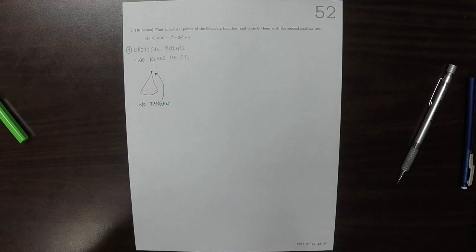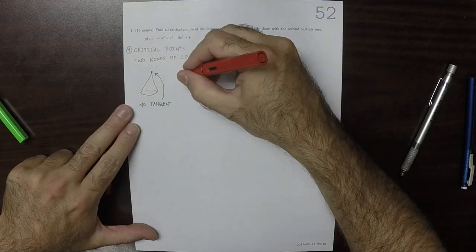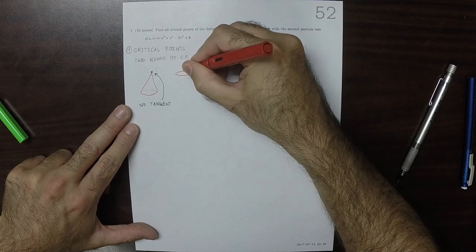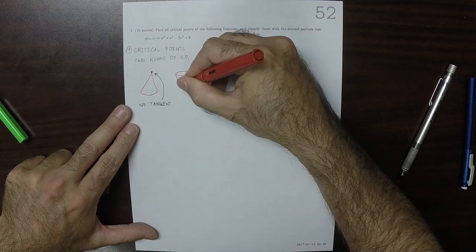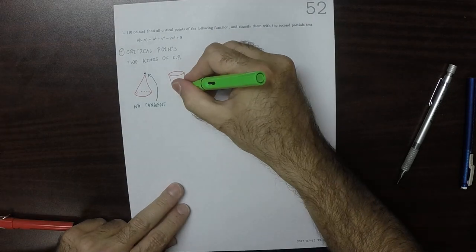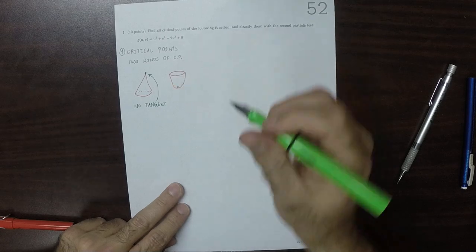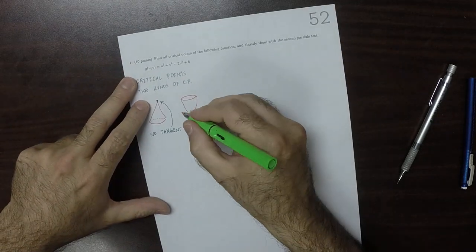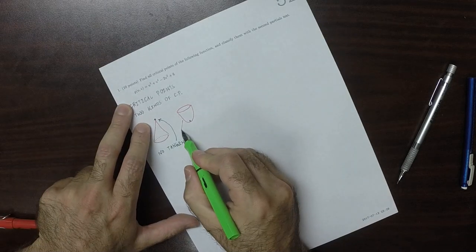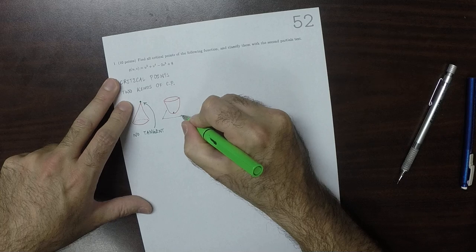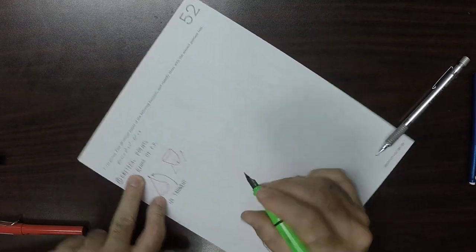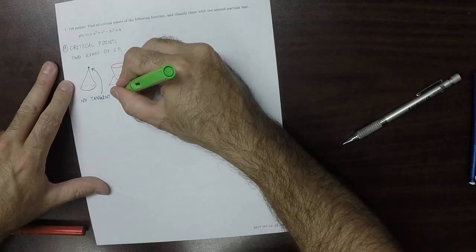The other kind of critical point can occur at a place like a minimum. So here, at the minimum point of that cup, there is a tangent, which means that the world begins to look flat if you're small enough. But more than that, and what makes it critical, is that this is a horizontal tangent.